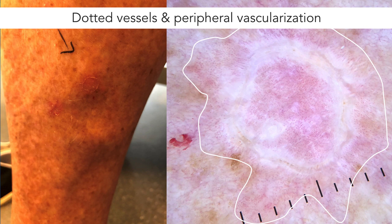Another vascular finding that can be found from time to time in porokeratosis is peripheral vascularization just outside the keratin rim. Demarcated by the white line, we see lots of dotted vessels around the keratin rim. We also see some dotted vessels within the keratin rim, but not as many in the central part of the lesion. In this case, we see abundant evenly distributed dotted vessels within the central atrophic area, but also surrounding the keratin rim within the white demarcation.